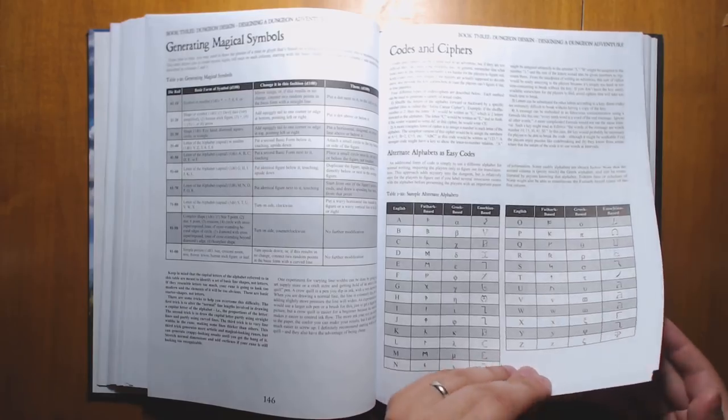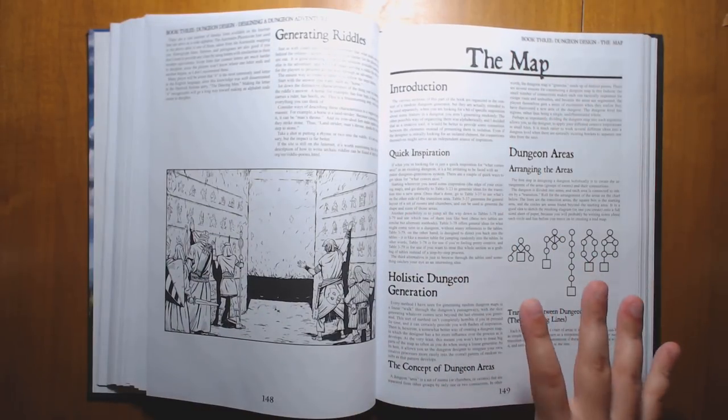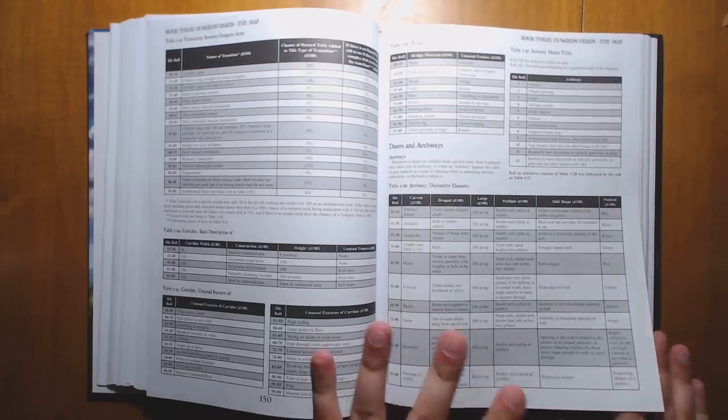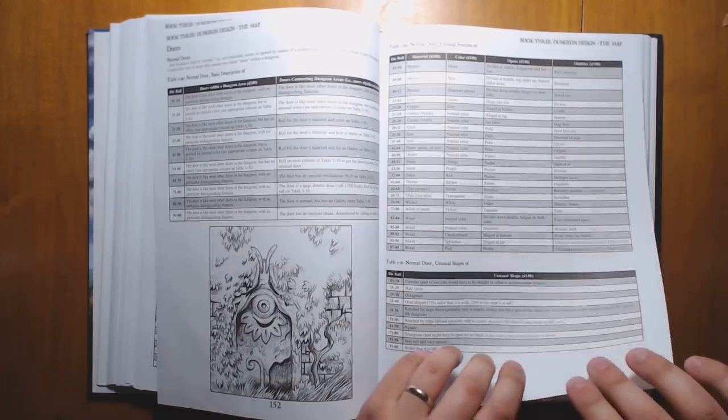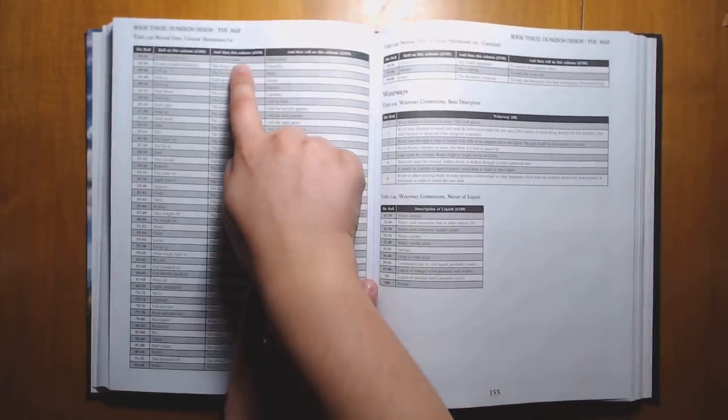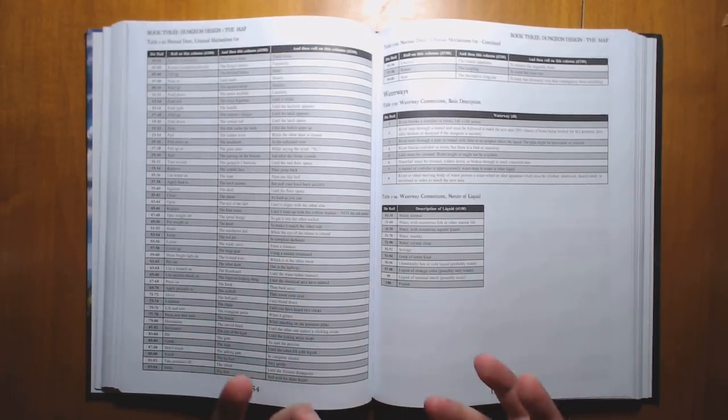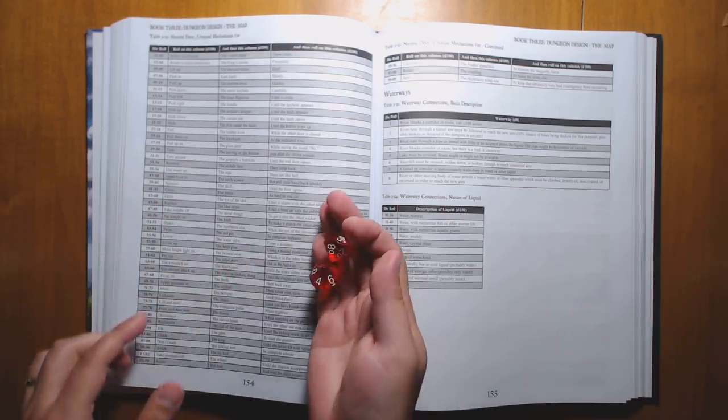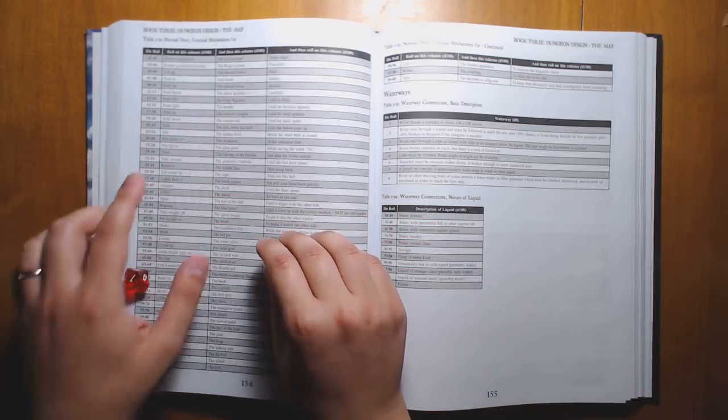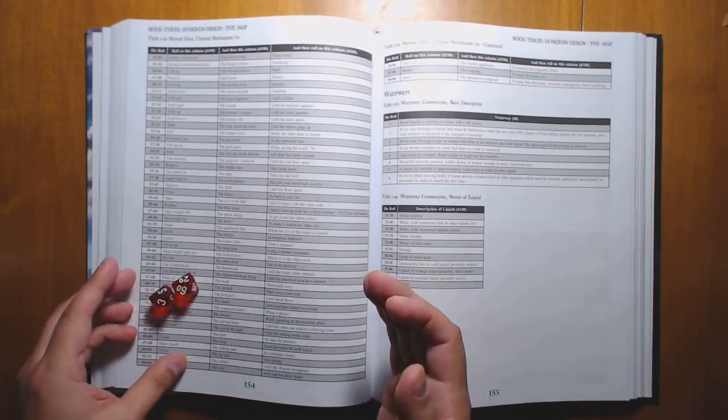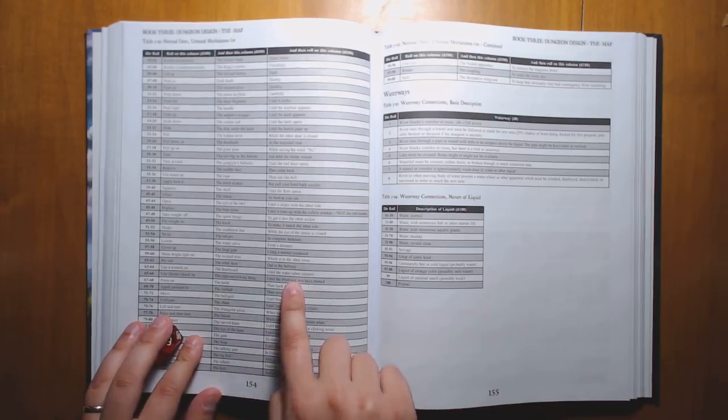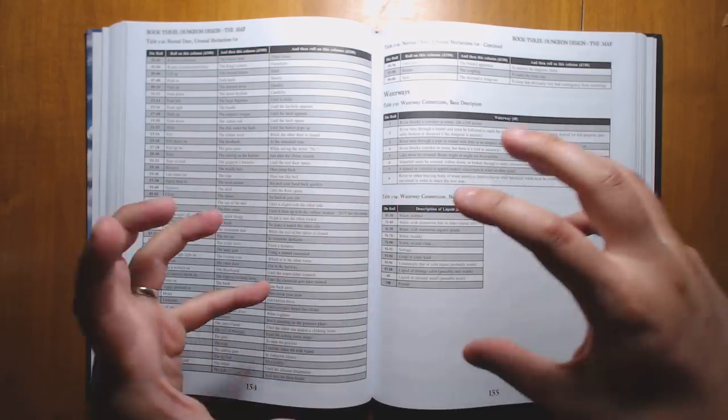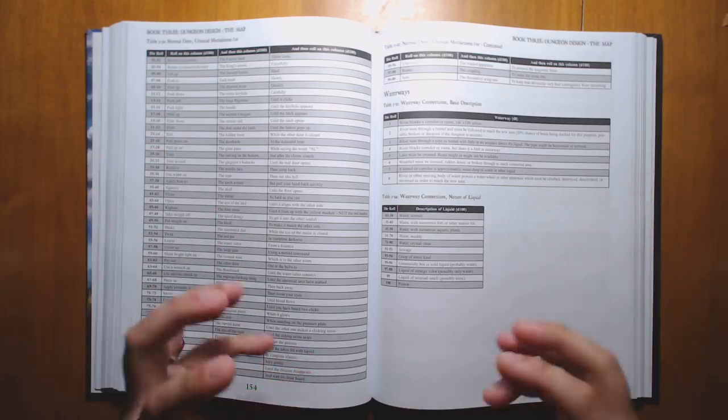We have rumor tables, codes and ciphers, generating magic symbols. A lot of really great theory and advice on how to create a map. Where do you start? What should the general layout of a dungeon look like? And a lot of really concrete material like cool doors and archways. Normal door, unusual mechanisms for a door. So let's roll on this to see what we get in terms of how are you going to open this door? You need to turn around the entire keyhole until the water tubes connect. You're immediately going to get some pictures in your head of a keyhole that somehow has to be rotated and is connected to tubes of water.